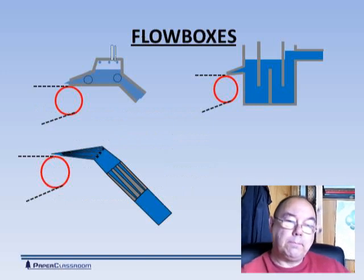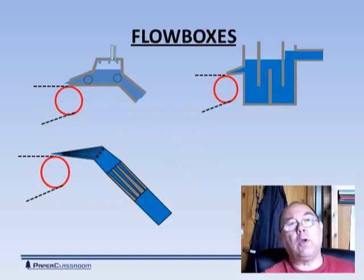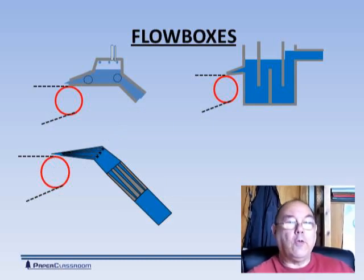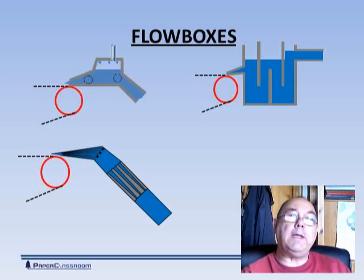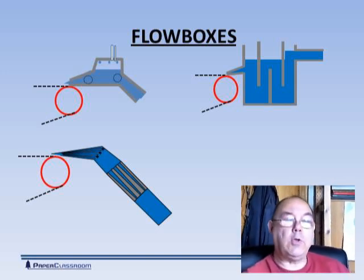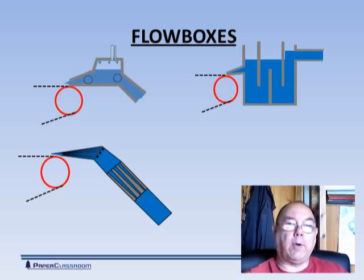So in our paper mill we bought our raw materials, we've done work on it, we've cleaned it, we've controlled the flow, we've put it through one of many different types of manifolds and eventually we enter the flowbox which will spread out the stock and squirt it onto the forming fabric.